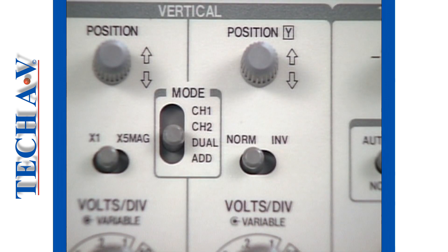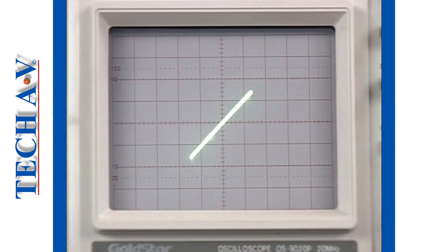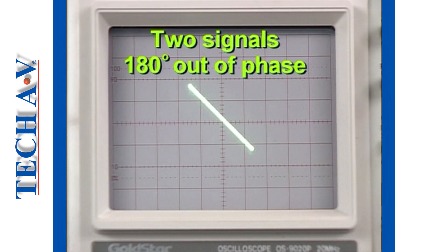By switching channel 2 to the invert position, we observe that the pattern changes to a diagonal in exactly the opposite direction, indicating that the two signals are now 180 degrees out of phase or exactly opposite one another.